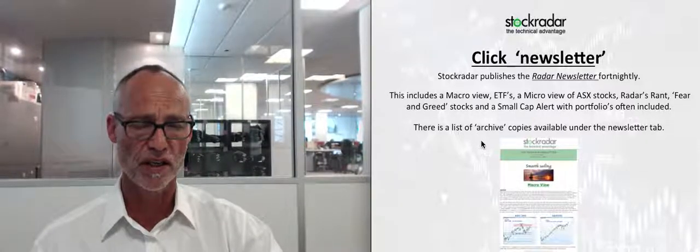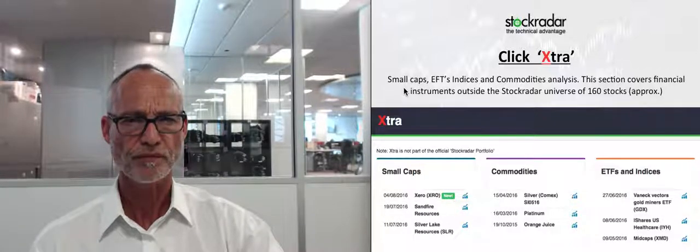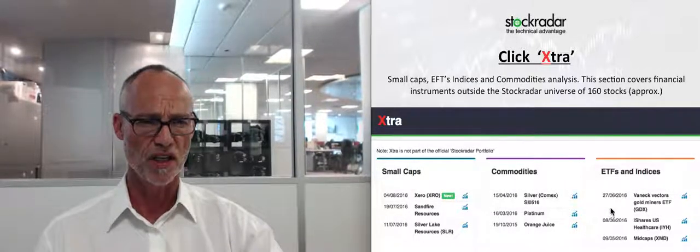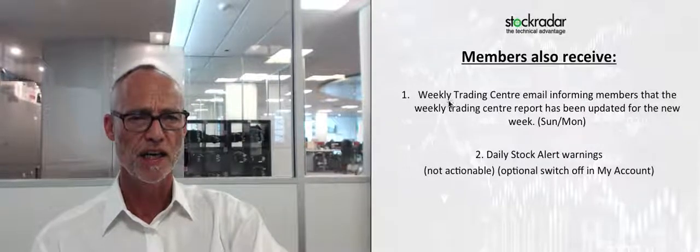The Extra section covers small caps, ETFs, indices, and commodities analysis — financial instruments outside the Stock Radar universe of 160 stocks. I go through a few small caps, some commodities, or some ETFs and indices, giving a basic look at what I'm thinking about those markets.